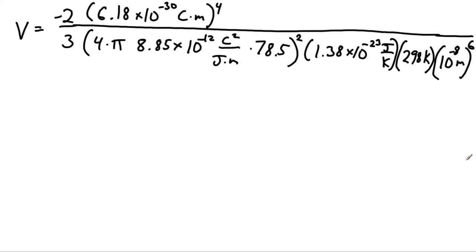On the top we have coulombs to the fourth and meters to the fourth. On the bottom we have coulombs to the fourth. On the bottom of the bottom—which goes up on top—we've got joules squared and meters squared. Over here we've got joules and kelvins on the bottom of the bottom, so that goes on top. I also have kelvins on the bottom and meters to the sixth. We should be able to cancel this.